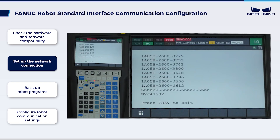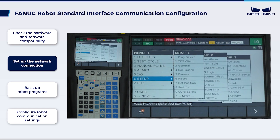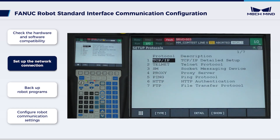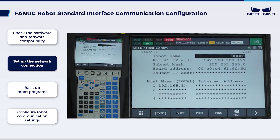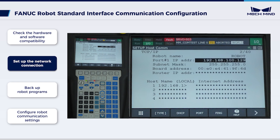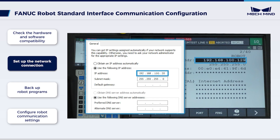Next, set IP addresses. Press Menu, Setup, and then select Host.com in the Context menu. Then press Enter to open the Setup Protocols window. Select TCP IP and press Detail to open the Setup Host.com window. Check the robot's IP address in the IP address line. It should match the IPC's IP address in the same subnet.